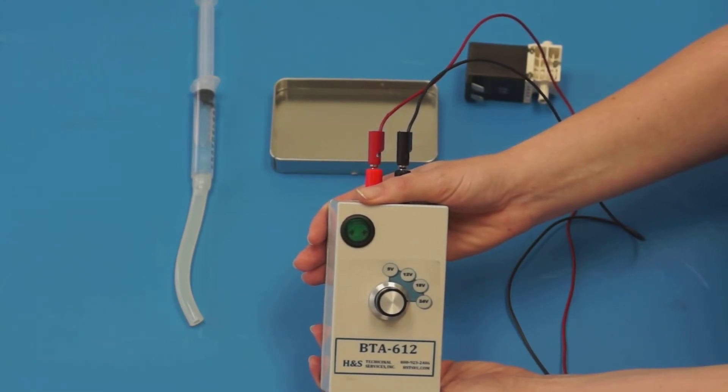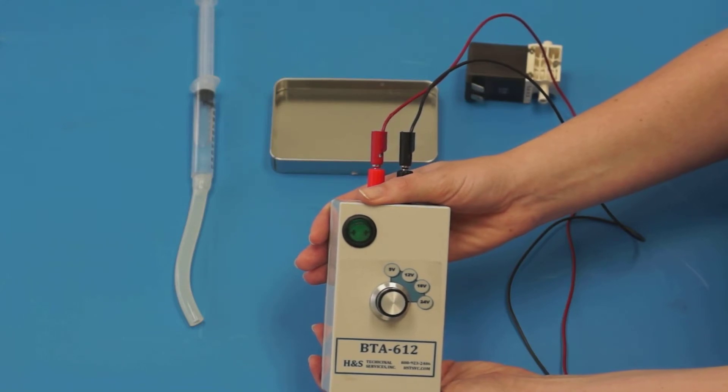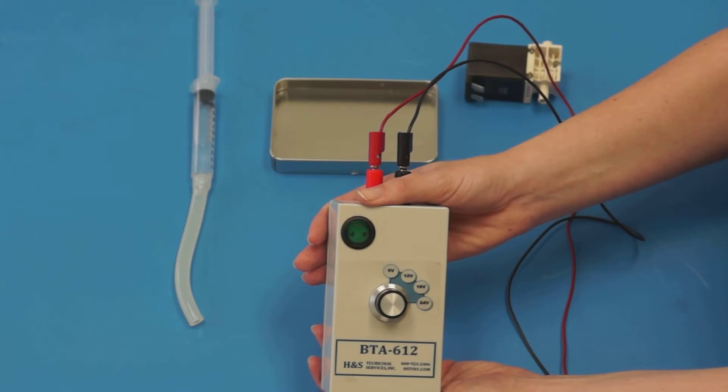The BTA612 is designed to verify a parts function without the requirement of putting it back into a machine and running through a pressure or activation test.